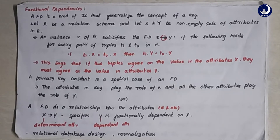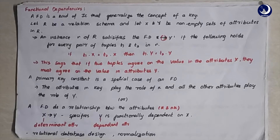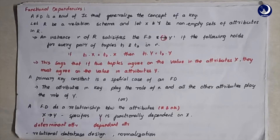The functional dependency X defines Y holds if, for every pair of tuples t1 and t2 in the relation instance, if t1.X equals t2.X, then t1.Y also equals t2.Y. This means that if two tuples have the same X values, their Y values should also match. For example, if two student records share the same student ID and name, their remaining attributes — contact, address, age — should also be the same.